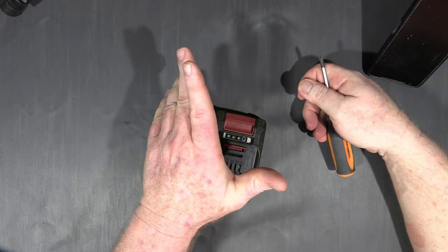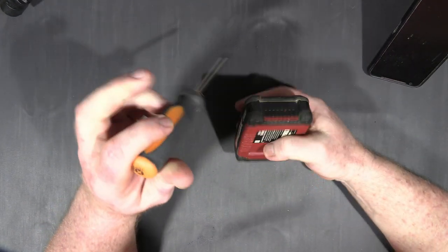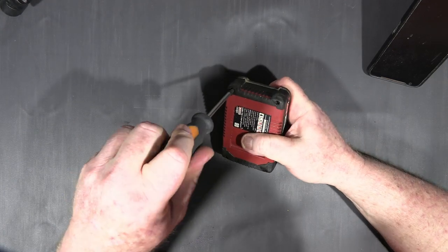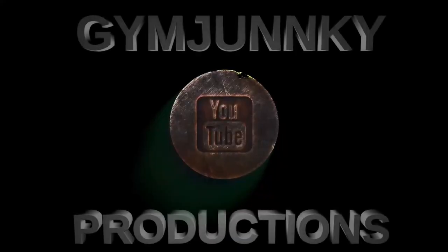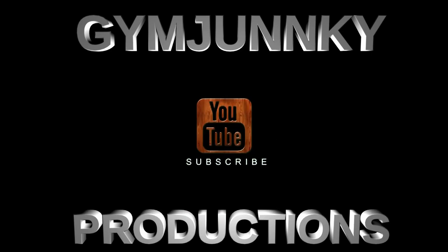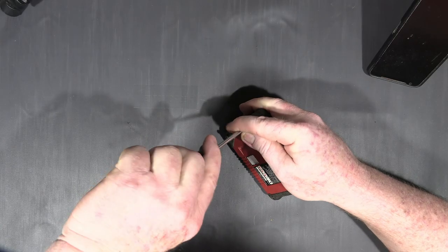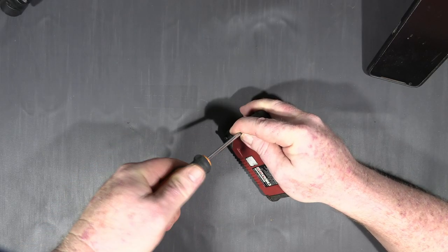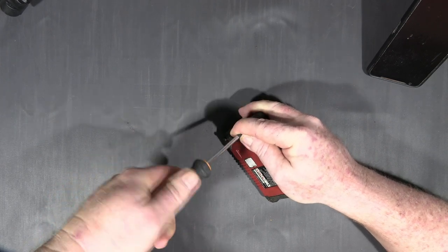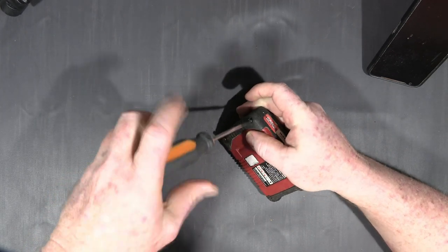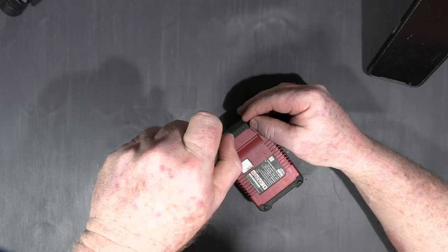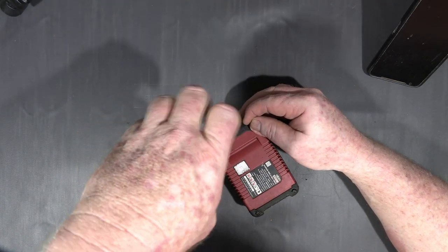G'day, my name's Jim and today we're going to be pulling down this Azito 2 amp battery. So I went to use this battery and it had shit itself, of course. So I decided we'll pull it down and have a bit of a squiz inside. As well, we could probably pull out the batteries and reuse them.